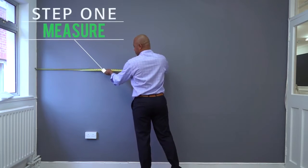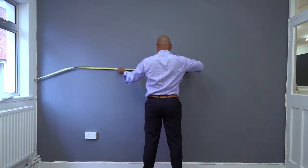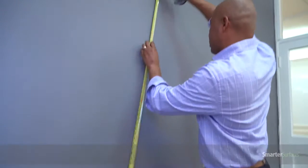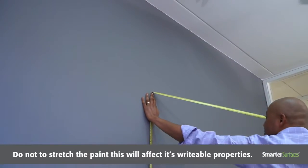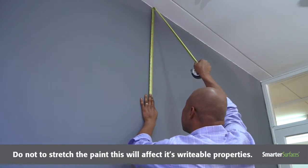Step 1. Measure. Accurately measure the area you wish to coat in SmartWall Paint Clear. It is important not to stretch the paint, as this will affect its writable properties.